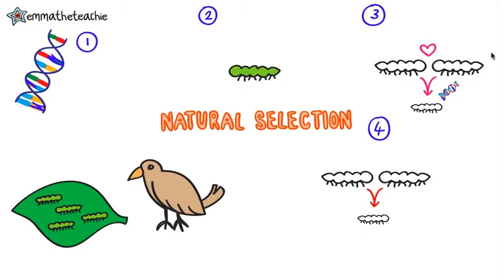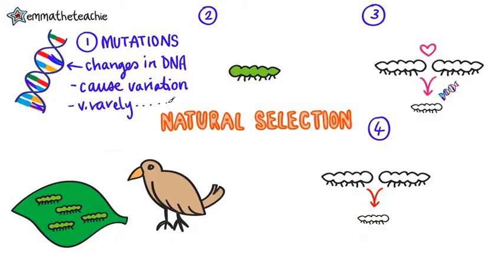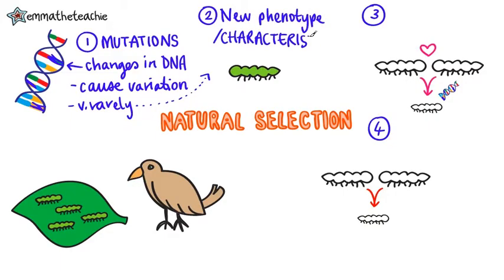You need to know the stages of natural selection, so let's break it down. It starts with mutations — these are changes in the DNA that cause variation in a population. Most of the time, mutations don't do anything and just go unnoticed. But very rarely they can cause a new phenotype or a new characteristic. For example, a mutation could cause this caterpillar to be brown rather than green like the rest of the population.